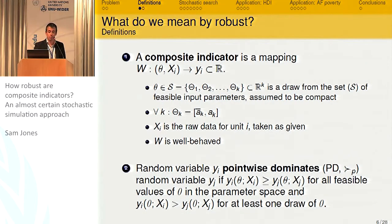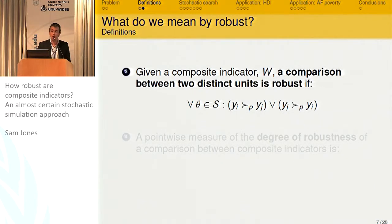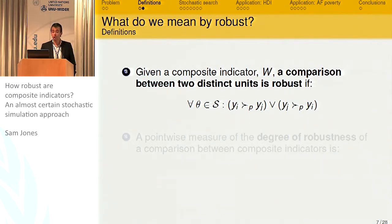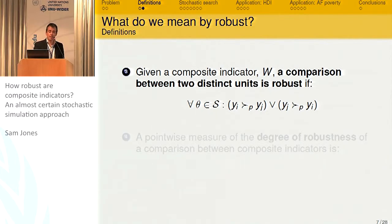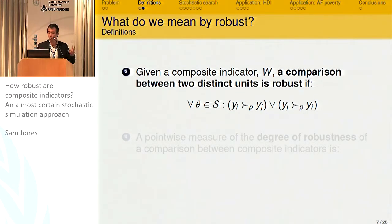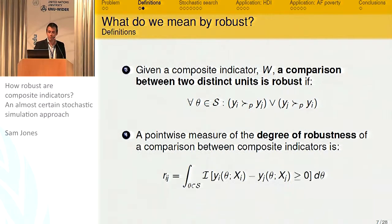So for any choice of parameters, that's important. That's really the definition of robustness. My definition of robustness for composite indicators is that y_i pointwise dominates y_j, or y_j pointwise dominates y_i — meaning a comparison is robust if, for any choice of parameters, we come to the same conclusion at least in terms of which is higher. We can also relax that slightly and get a degree of robustness, which is simply the share of points in the parameter space for which y_i is superior to y_j.